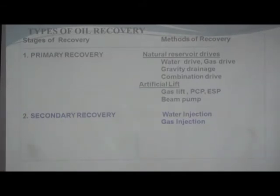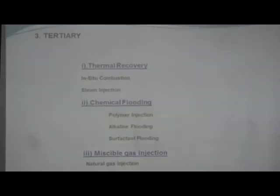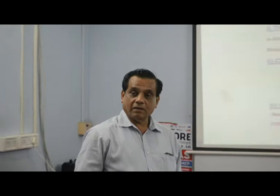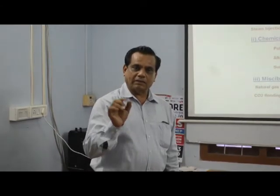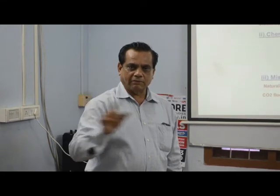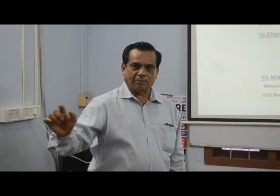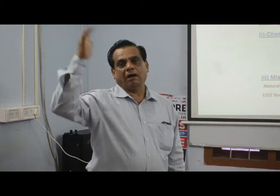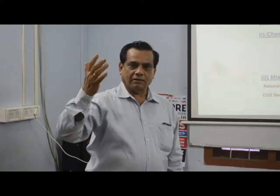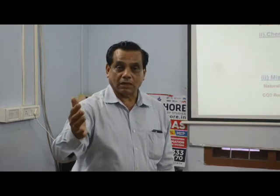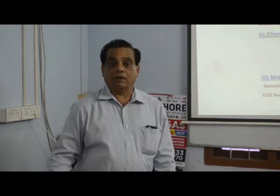If secondary recovery is also failing and not producing enough, then we look for a tertiary method to recover heavy oil — with API of only 12 or 15. API means American Petroleum Institute gravity. To find the API, take a sample of oil, measure the specific gravity, then use the formula: 141.5 divided by specific gravity, minus 131.5. If specific gravity is low, API will be high; if specific gravity is high, API will be low. We need high API oil to export to other countries.